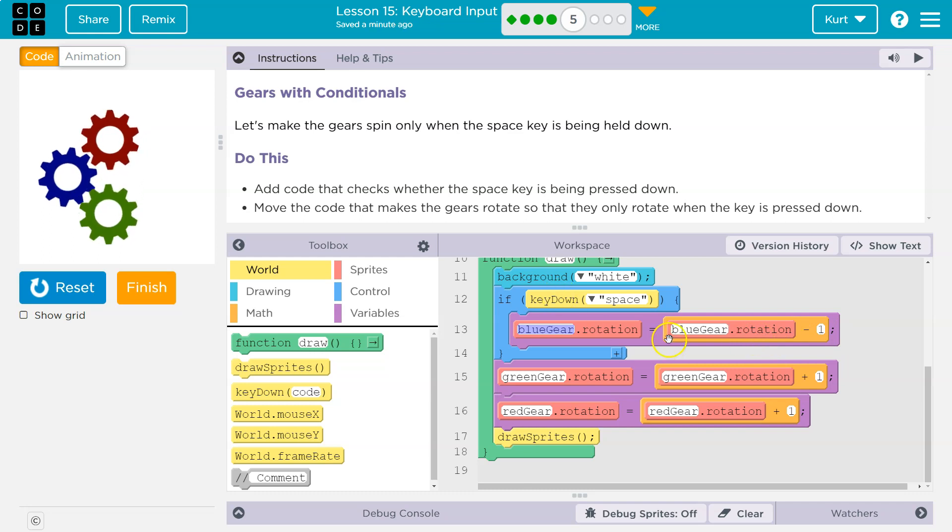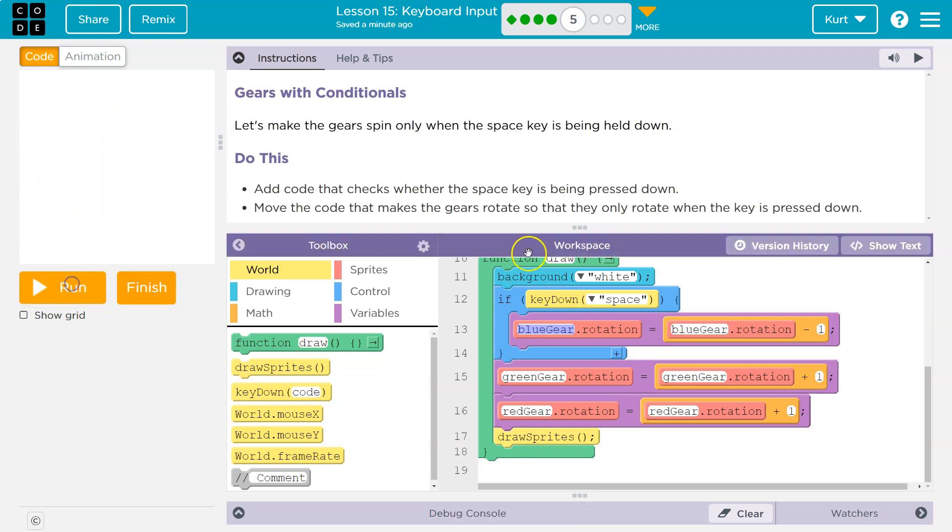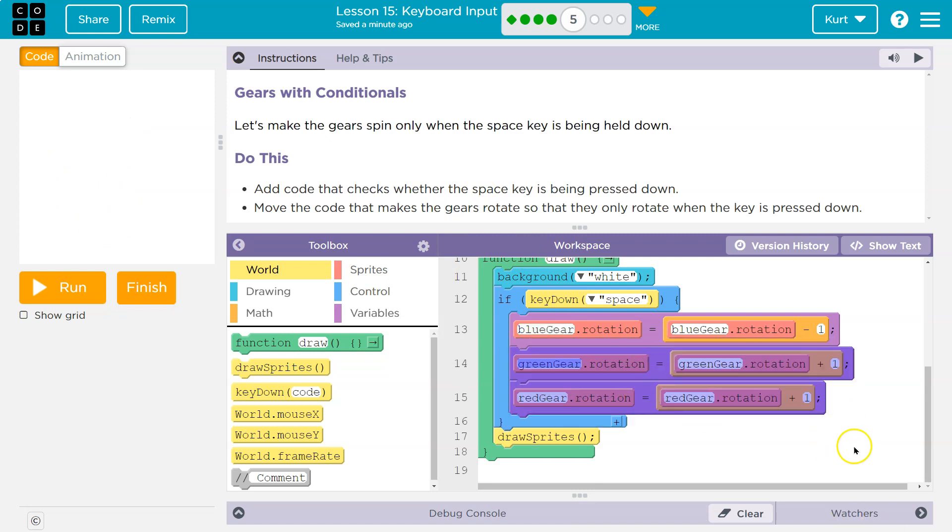Now it wants us to move all gears. Let me release space. Let me hit reset to make that happen, to make it so the gears only move all of them if space is pressed, I need all of the code inside of our if statement inside of this blue mouth.